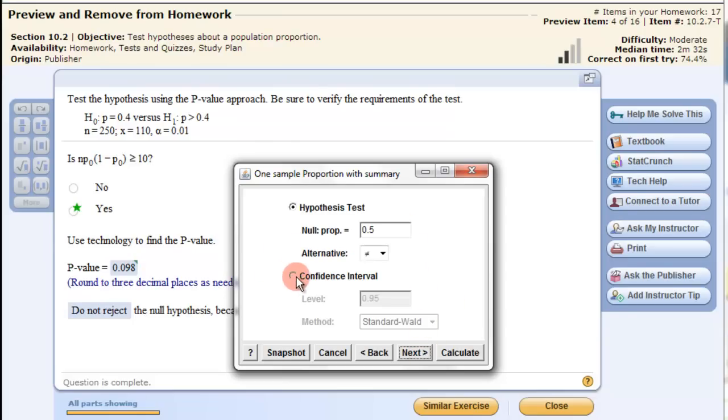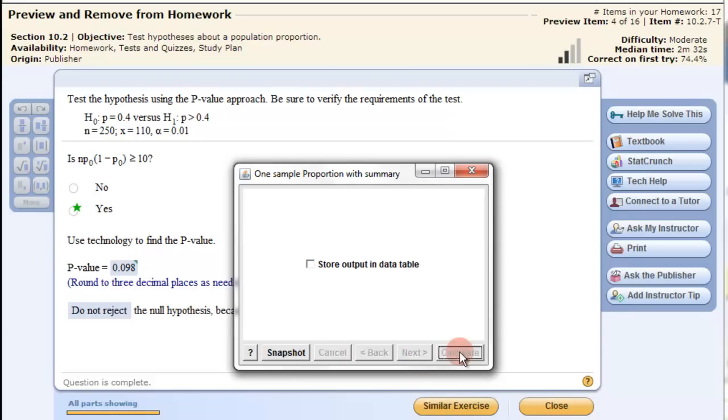We're doing a hypothesis test. So we've got the p₀ that needs to go here. Our p₀ is going to be this value right here, 0.4. So 0.4. And then we need to choose which test we're doing. We're doing greater than. So the alternative is greater than that. Click Next and then Calculate.